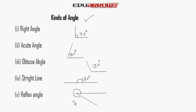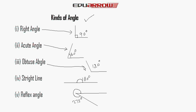To recap: an acute angle is less than 90 but more than 0 degrees; an obtuse angle is more than 90 but less than 180 degrees; a straight line always has a fixed angle of 180 degrees; and a reflex angle is more than 180 but less than 360 degrees.